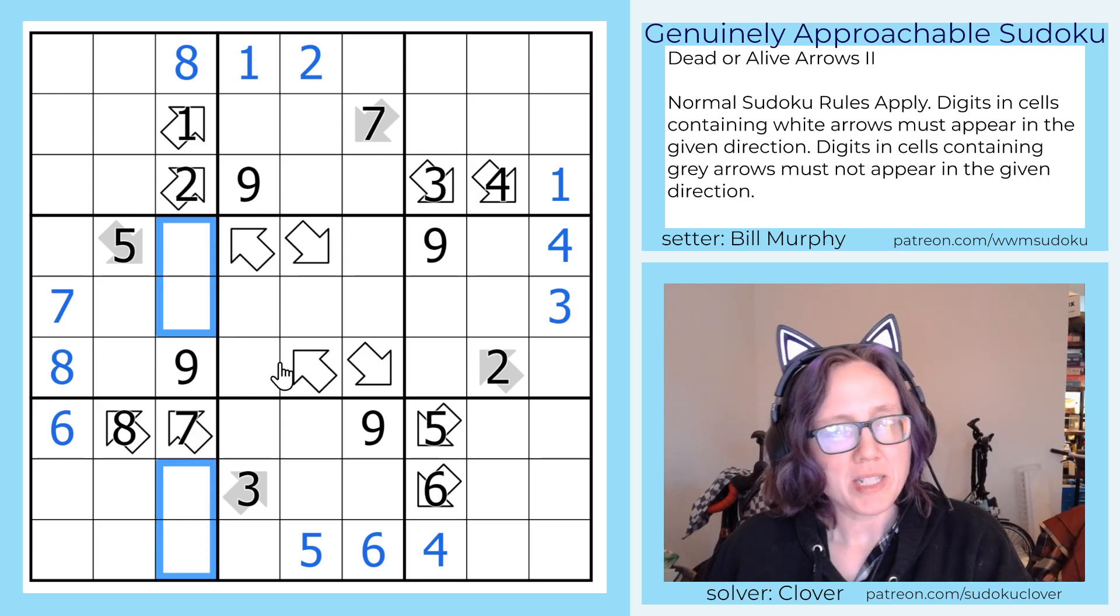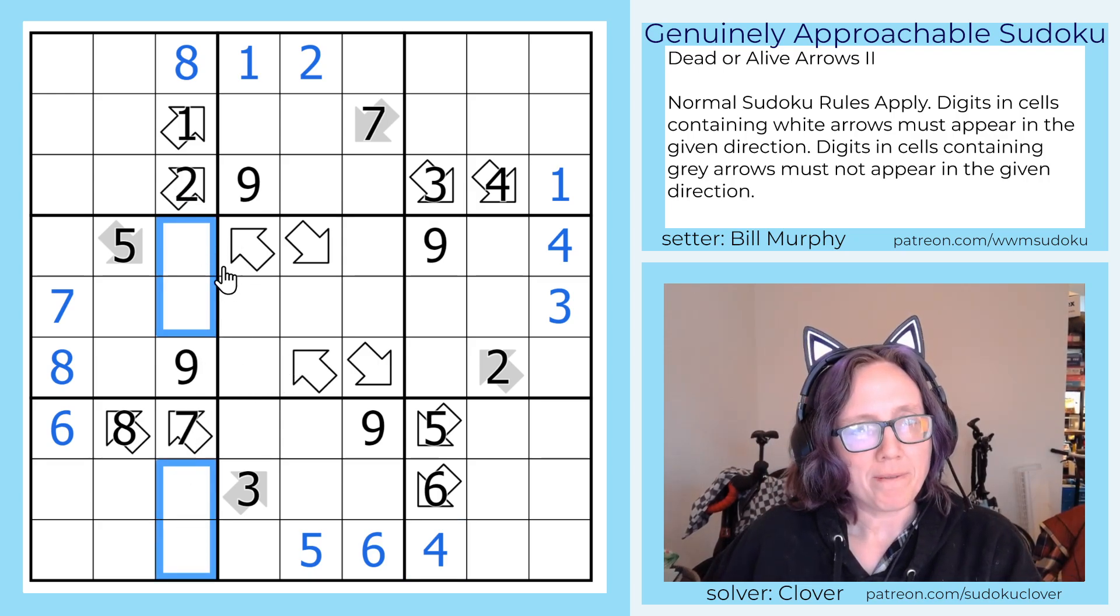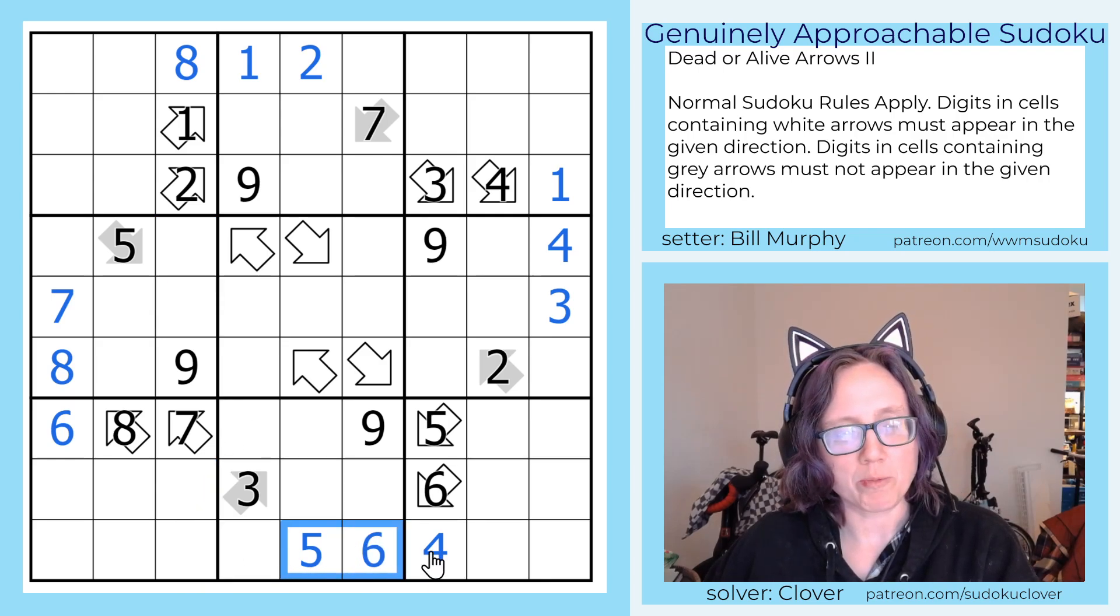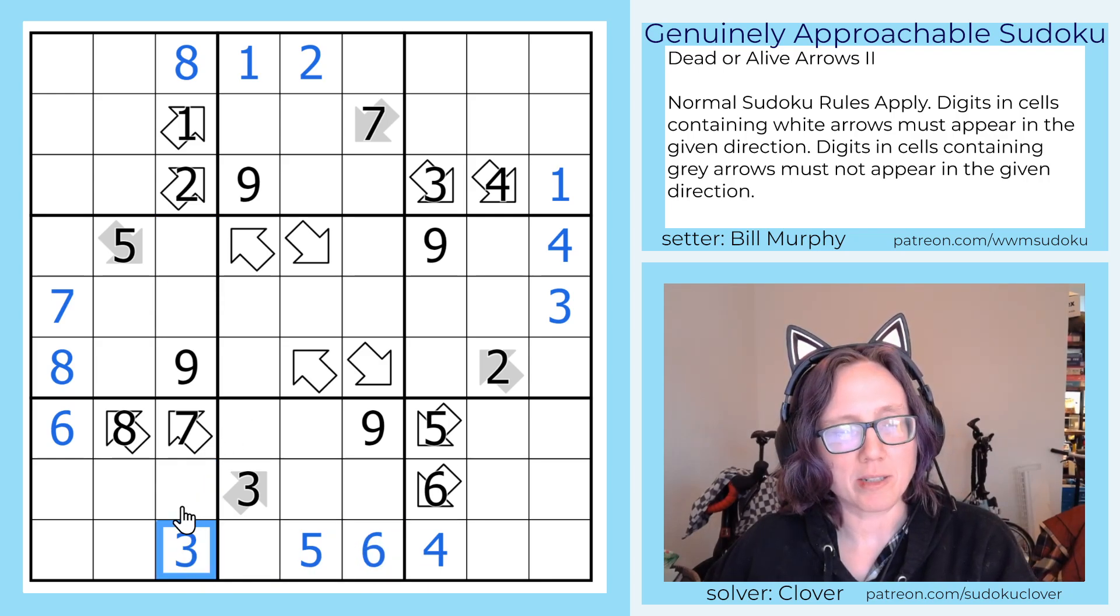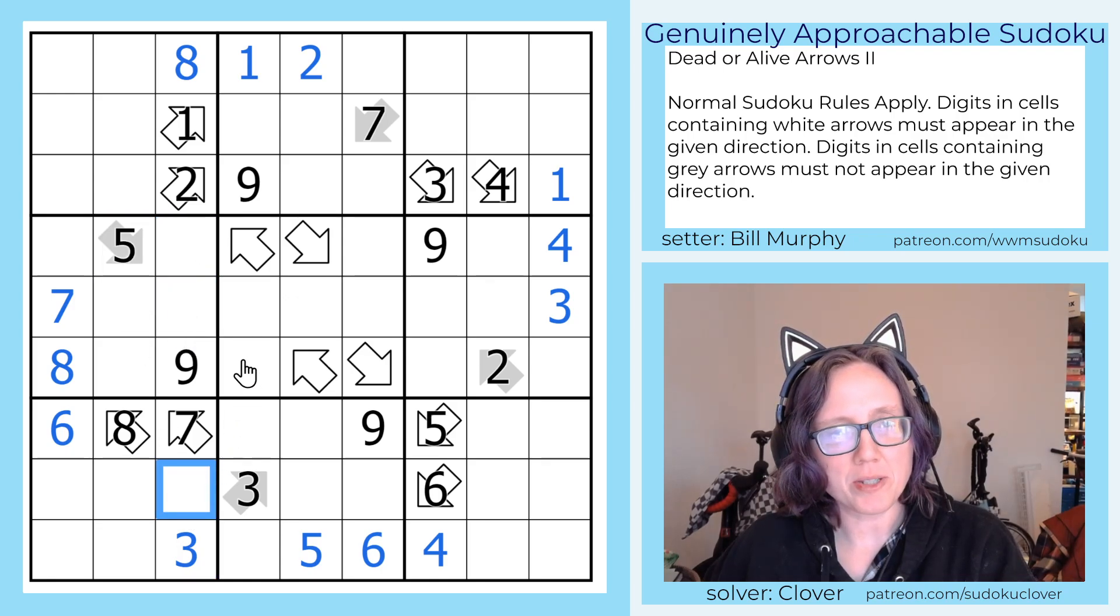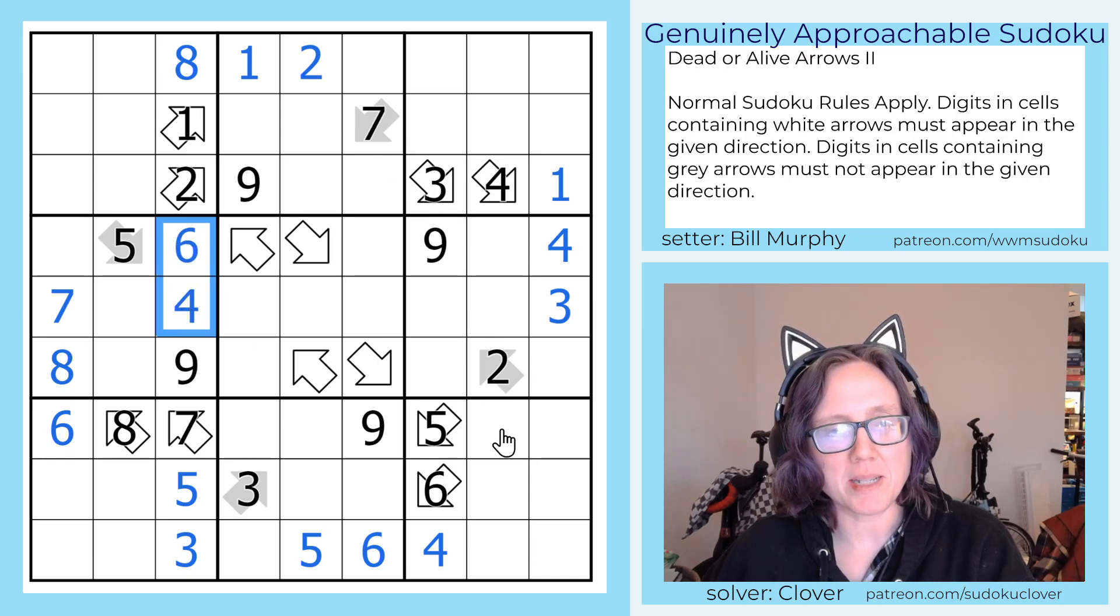In this column we still need a 3, a 4, a 5, and a 6. We have 3 of those digits in this row already, so this is going to be a naked 3. And now because there's a 5 here, we can't put 5 in these two cells, so 5 has to go there. And that makes our last two digits, 4 and 6, disambiguate like this.